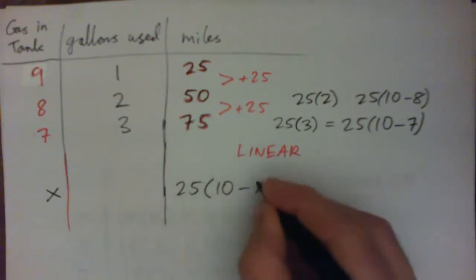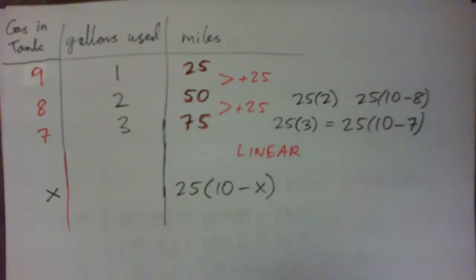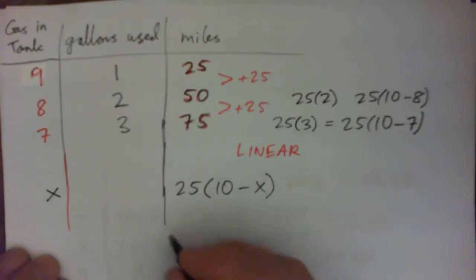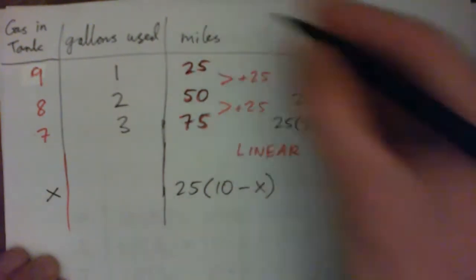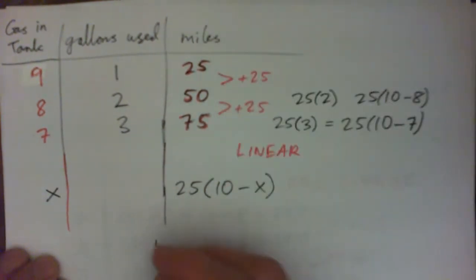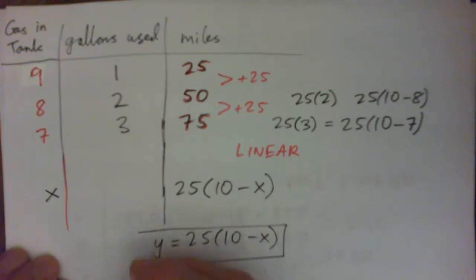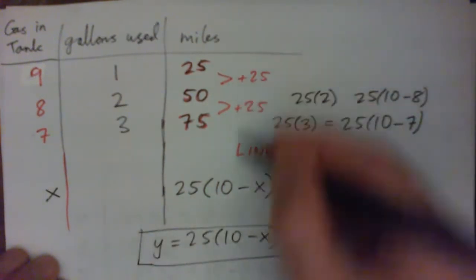So that's kind of a fun little formula for coming up with the amount of miles driven given gas left in the tank, right? So something like, yeah, something like y equals 25 times 10 minus x. Yes, it is linear because it is the same number change each time, right?